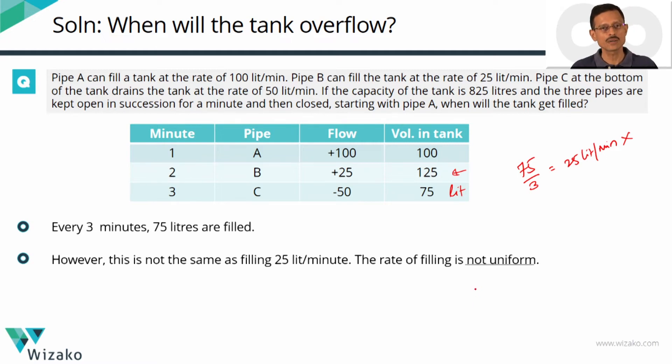So how many such cycles are required? At the end of each cycle we have 75 liters getting into the tank. We need 825 liters to fill the tank. So 825 divided by 75 because at the end of each three minute cycle we have 75 liters. So it's going to take us 11 cycles. Each cycle is of duration three minutes. So it's going to take us 11 into 3, 33 minutes right. Looks everything is all right.